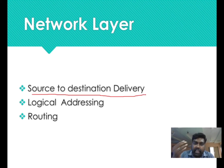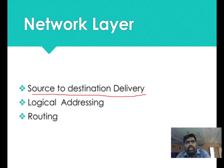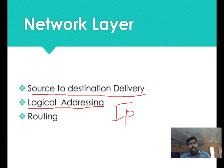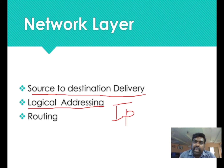You have to understand the difference. We are talking about source to destination delivery. What is the source to destination delivery? What type of destination? What is the problem with the data? For addressing, we use logical addressing — that is, IP address. Physical address is used for local data transfer, but logical addressing is used if you want to transmit data to a different network.